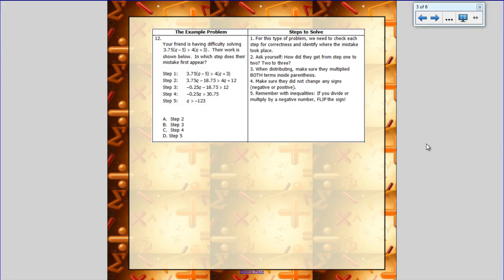Okay, the third problem on your test correction page is actually test problem number 12. So here's what it says: your friend is having difficulty solving 3.75 times the quantity of Q minus 5 is greater than 4 times the quantity of Q plus 3. Their work is shown below. In which step does their mistake first appear? You've got the five steps of their problem, we've got to find out where we first see the mistake.